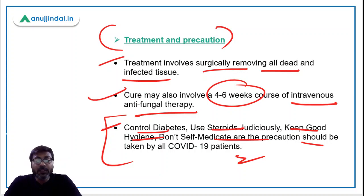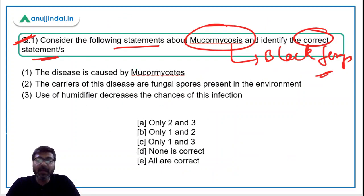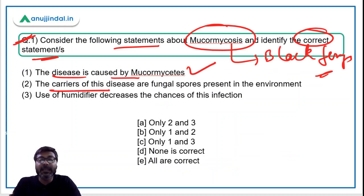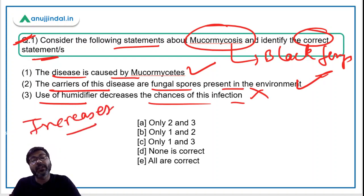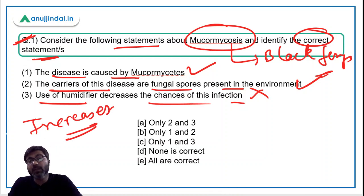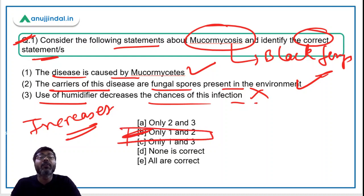Coming back to the question — Statement 1: the disease is caused by mucormycetes — correct. Statement 2: the carriers of this disease are fungal spores present in the environment — correct. Statement 3: use of humidifier decreases the chances of infection — incorrect, it actually increases the chances because moisture is a favorable condition for fungal spores to grow. Therefore, the correct answer is option B — only statements one and two.